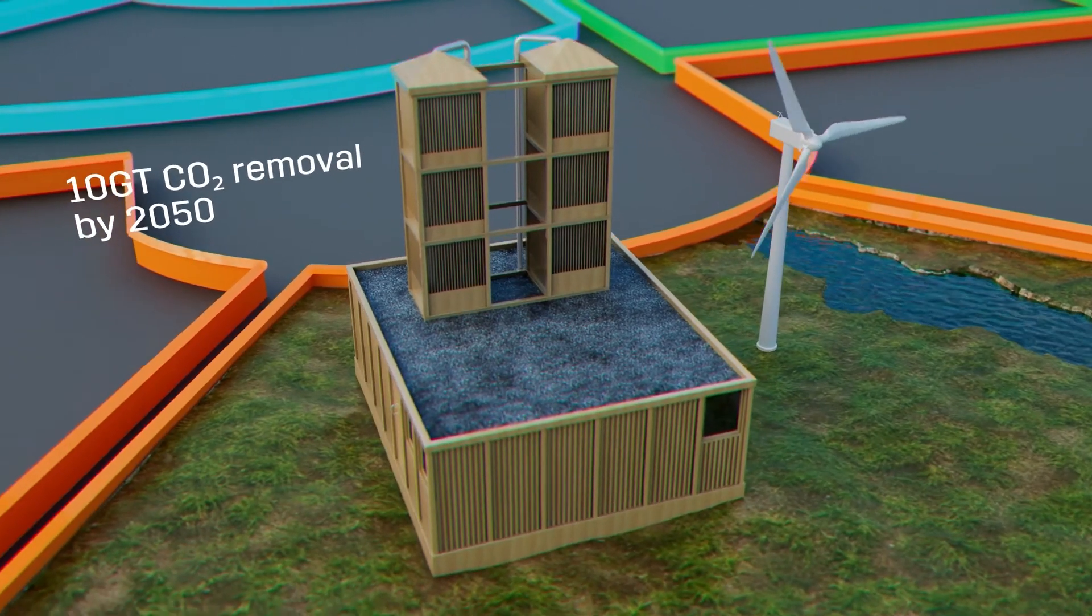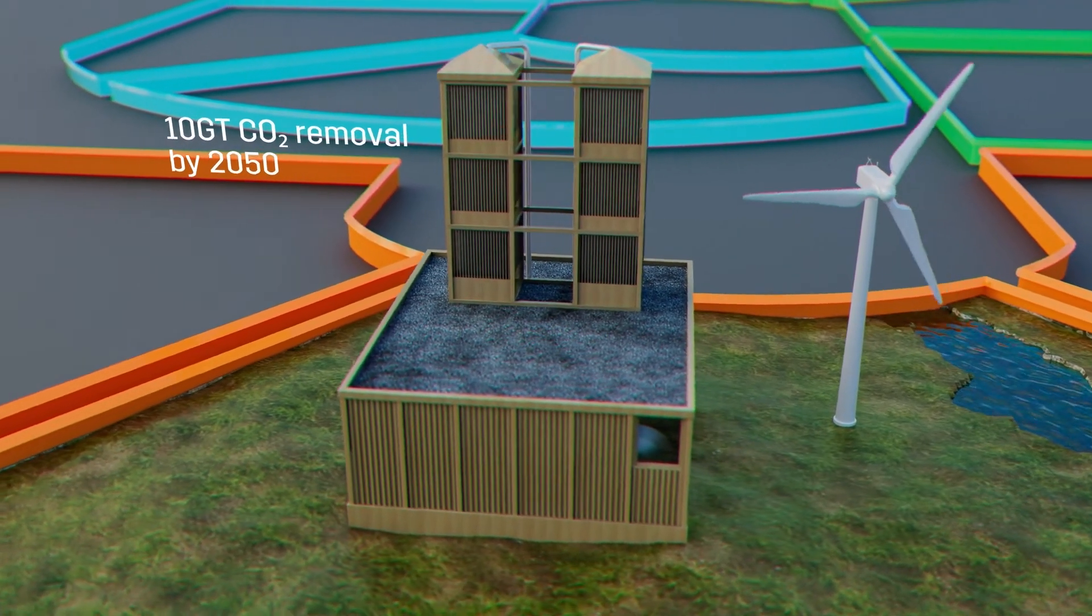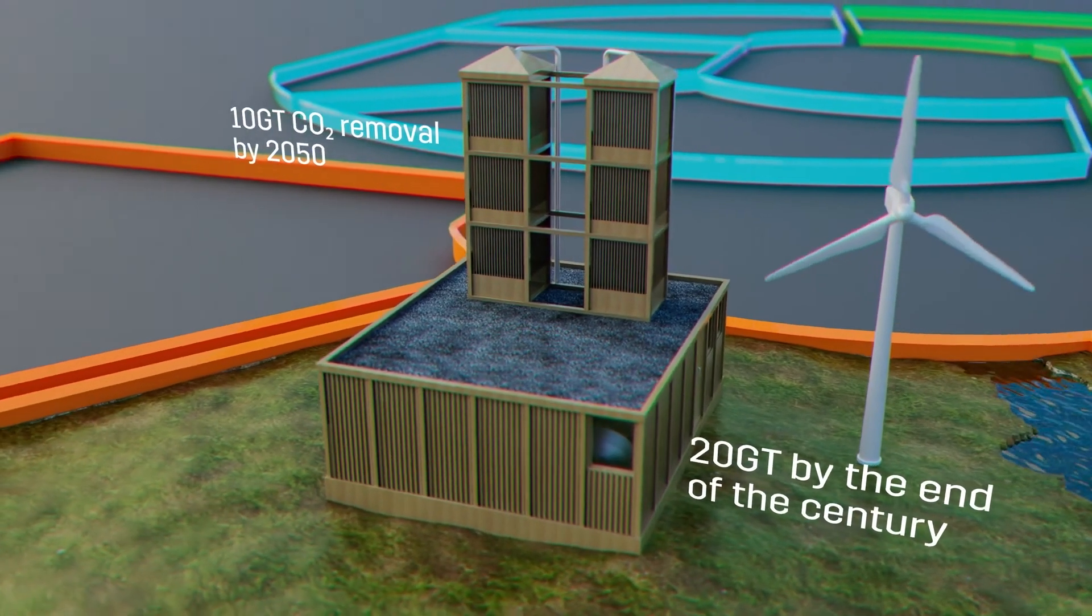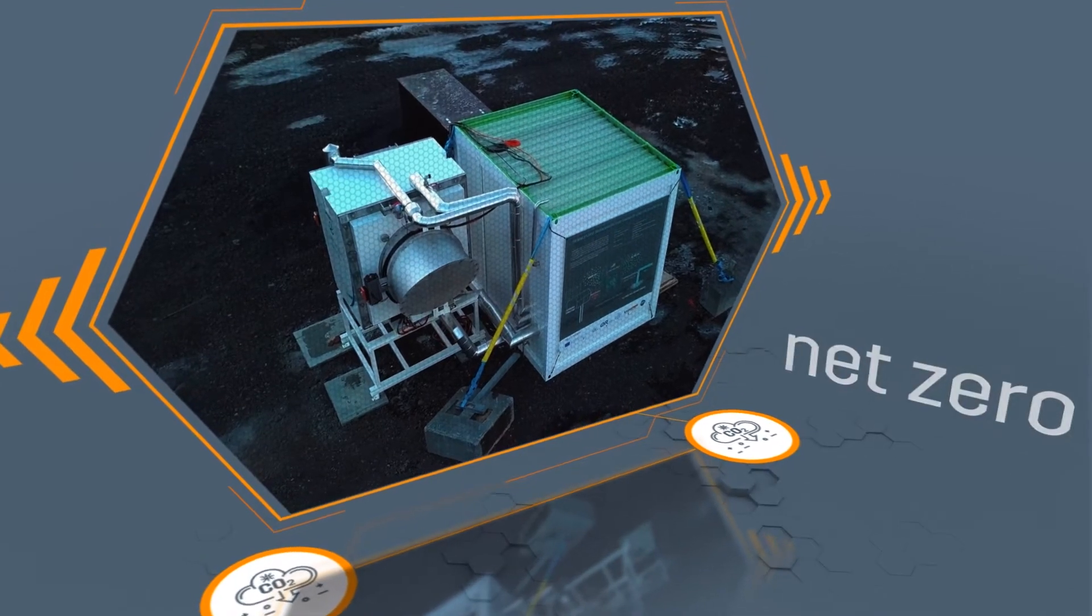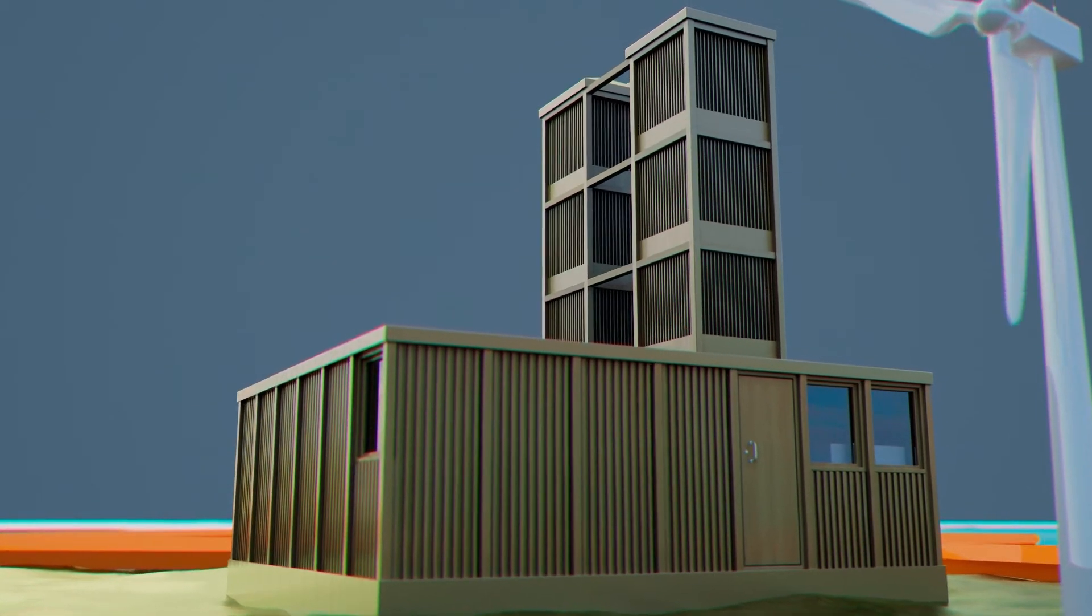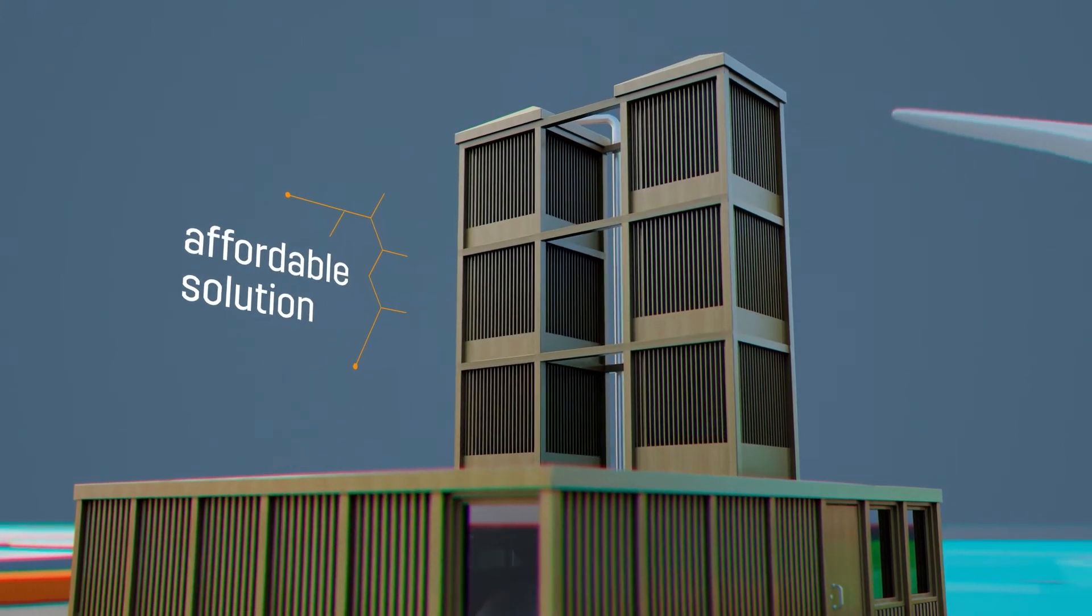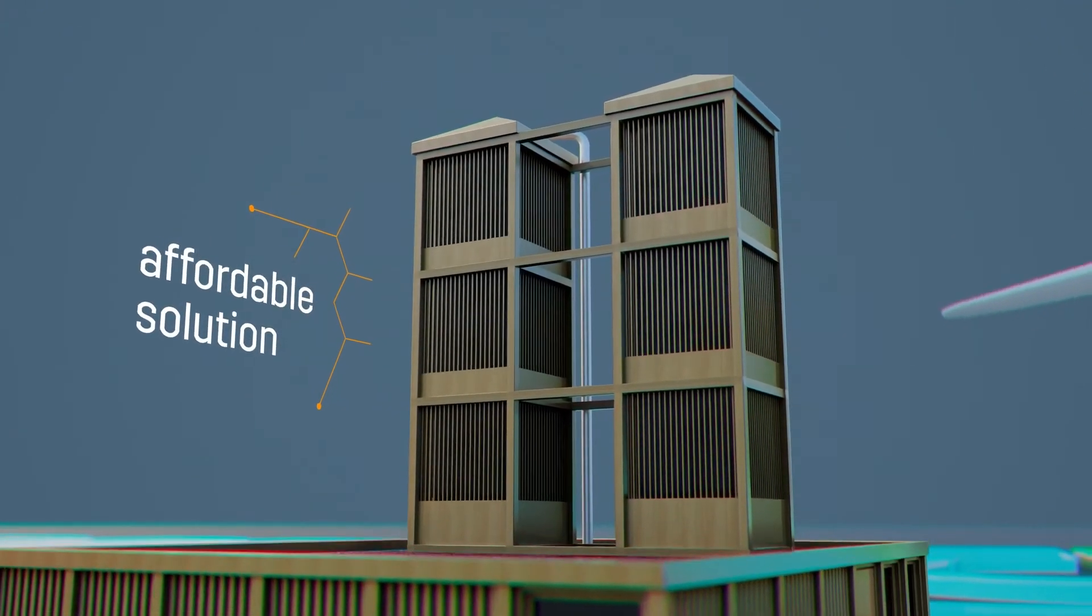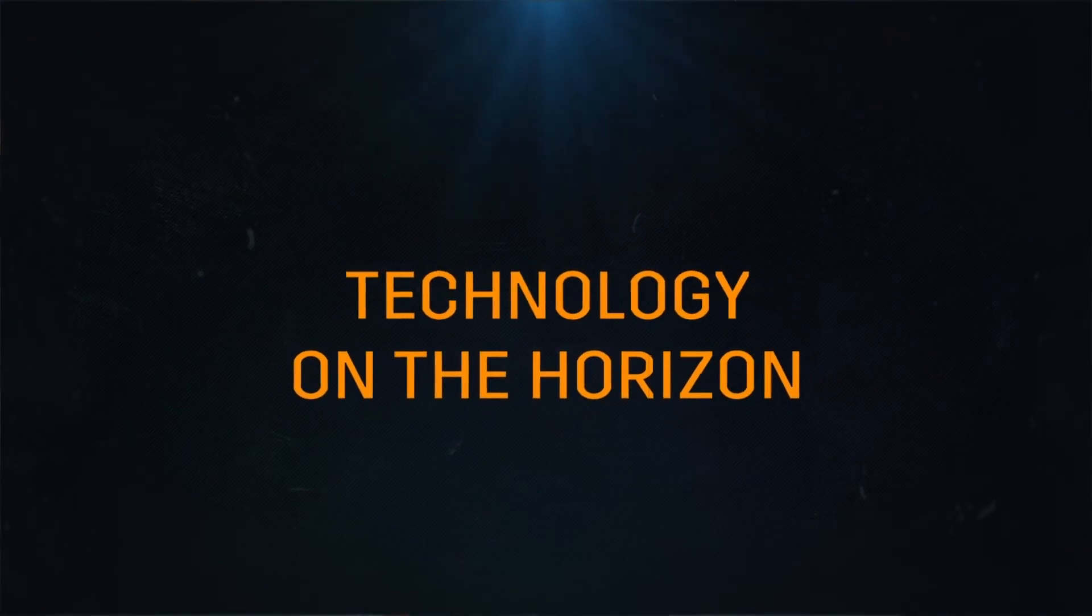With an estimated 10 gigatons of CO2 removal per year required by 2050, potentially doubling to 20 gigatons by the end of the century, direct air capture technologies will play a key role in delivering net zero objectives through mitigating CO2 emissions. The scalability and sustainability of the smart DAC system makes it an affordable solution to small, medium and large scale capture of CO2.